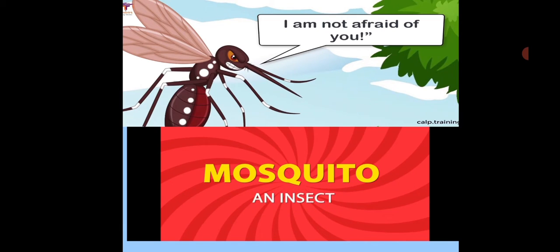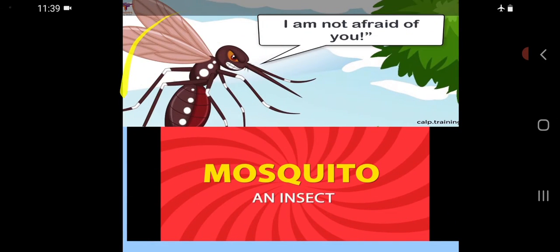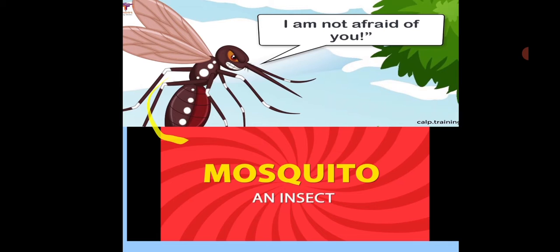The word mosquito — an insect you all know. In summer, mosquitoes come where the place is very dirty and full of water. The mosquito drinks our blood.